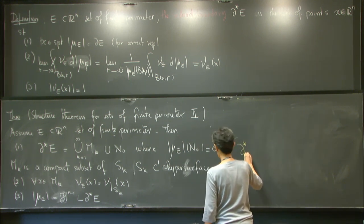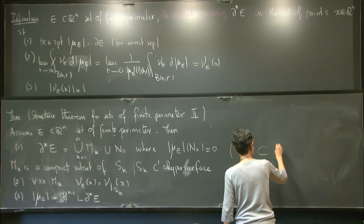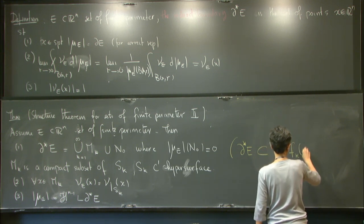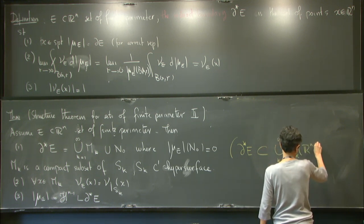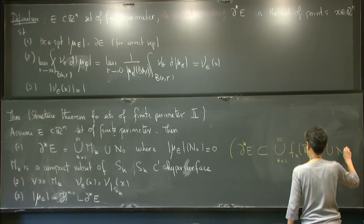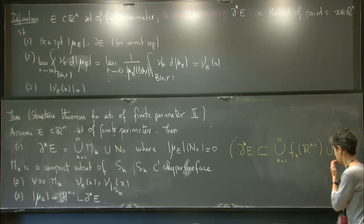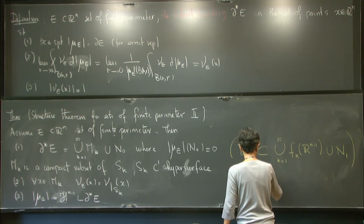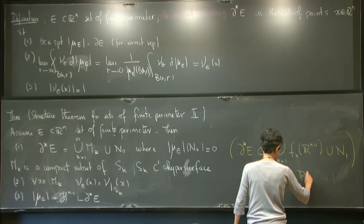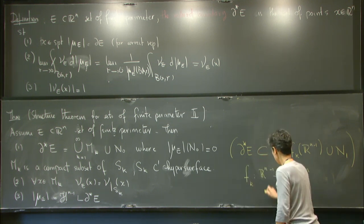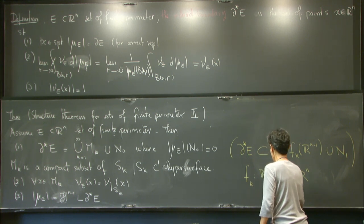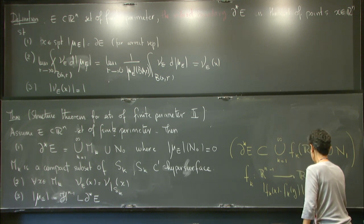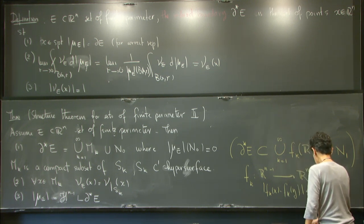Alternatively, you might find in other books the statement that the reduced boundary of E is contained in a countable union of Lipschitz images. A Lipschitz function satisfies |f_k(x) − f_k(y)| ≤ L_k|x − y|. Since a Lipschitz function is differentiable almost everywhere (as Z showed you), at all points of differentiability you have a unit normal and the structure theorem still holds.